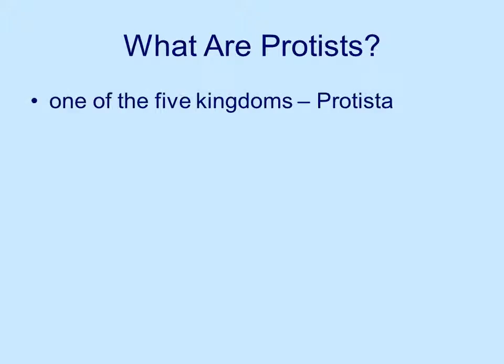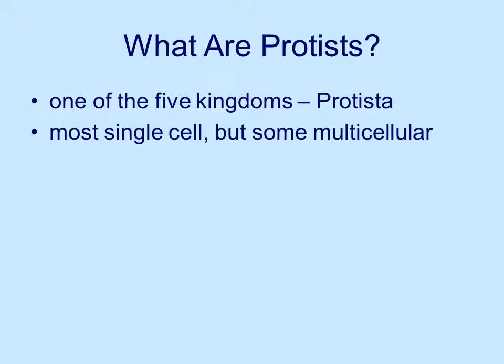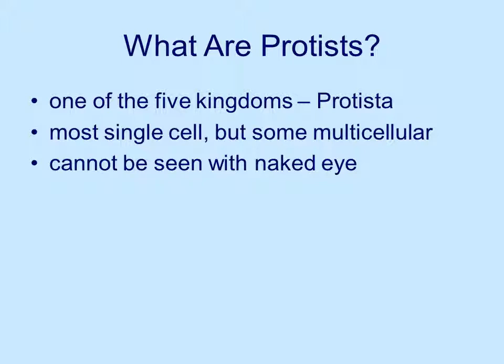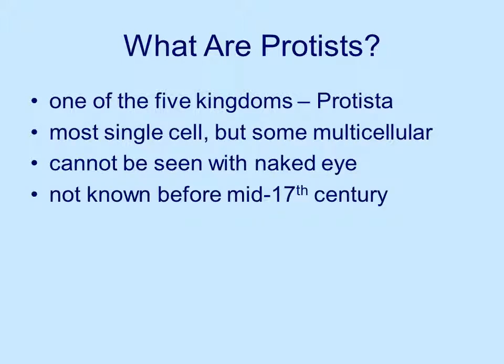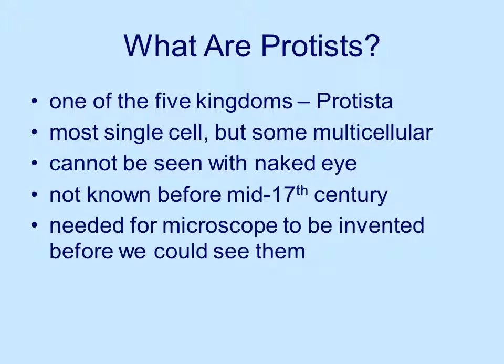What are protists? They're one of the five kingdoms — the kingdom Protista. They're mainly single-celled creatures, but some of them are multicellular, so we start to get a little bit of a problem in classification. You can't see them, at least not with the naked eye. As a result, early classification schemes just dealt with plants and animals and birds and fish. We couldn't classify Protista before about the middle of the 17th century because we could not see them — the microscope had to be invented first.